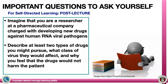For your self-directed learning: imagine you are a researcher at a pharmaceutical company charged with developing new drugs against human RNA viral pathogens. Most outbreaks and pandemics are caused by RNA viral pathogens — like the current pandemic caused by an RNA virus. Can you describe at least two types of drugs you might want to pursue, what class of virus they would affect, and why you feel those drugs would not harm the patient?